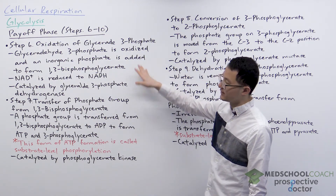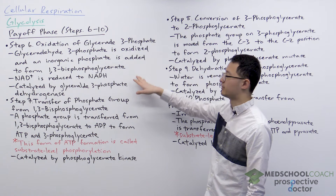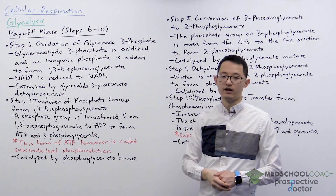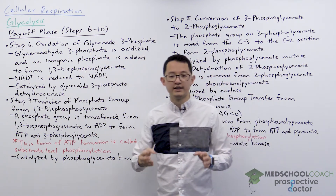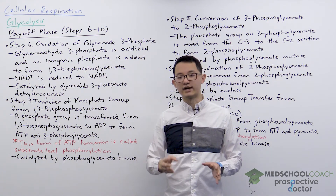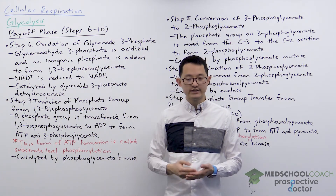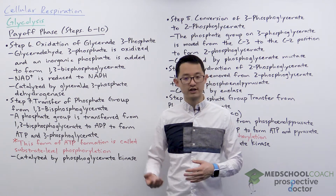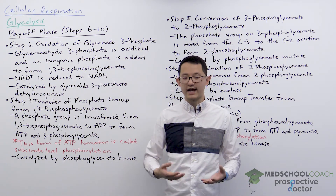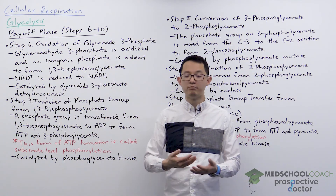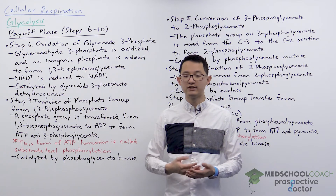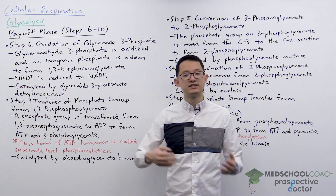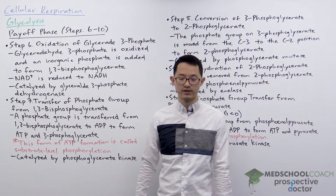Step six, the first step of the payoff phase, is the oxidation of glyceraldehyde 3-phosphate. Something important to recognize here is that oxidation and reduction always come in pairs — these are redox reactions — so if something gets oxidized, something also has to be reduced.